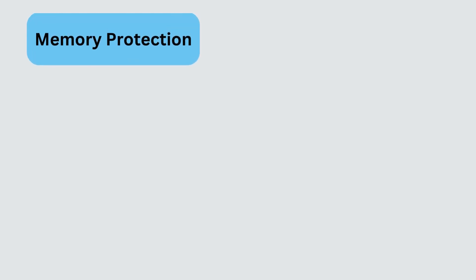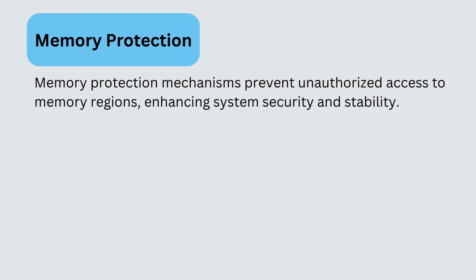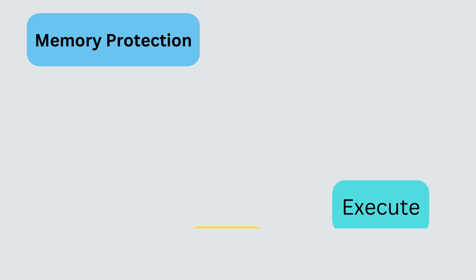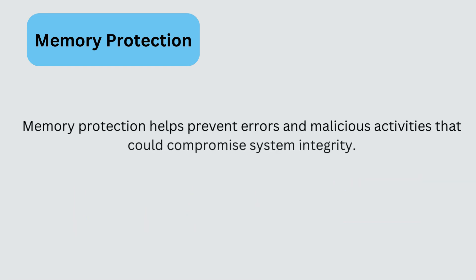Memory protection mechanisms prevent unauthorized access to memory regions, enhancing system security and stability. The OS assigns access permissions — read, write, execute — to memory pages and checks access rights during memory accesses. Memory protection helps prevent errors and malicious activities that could compromise system integrity.